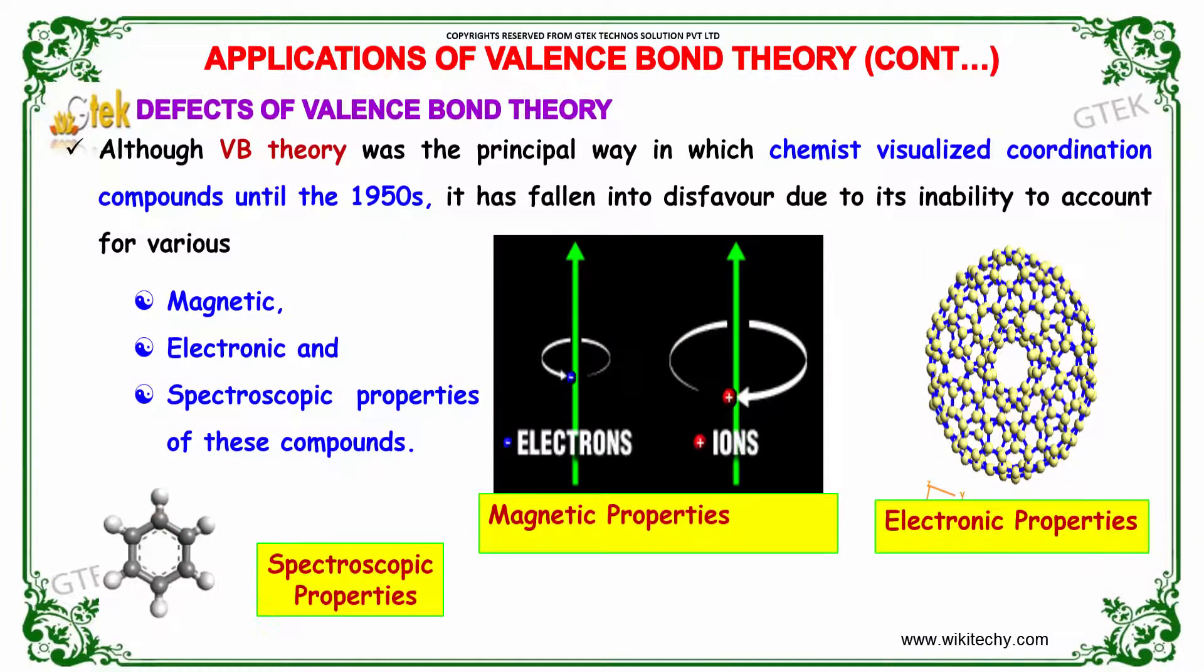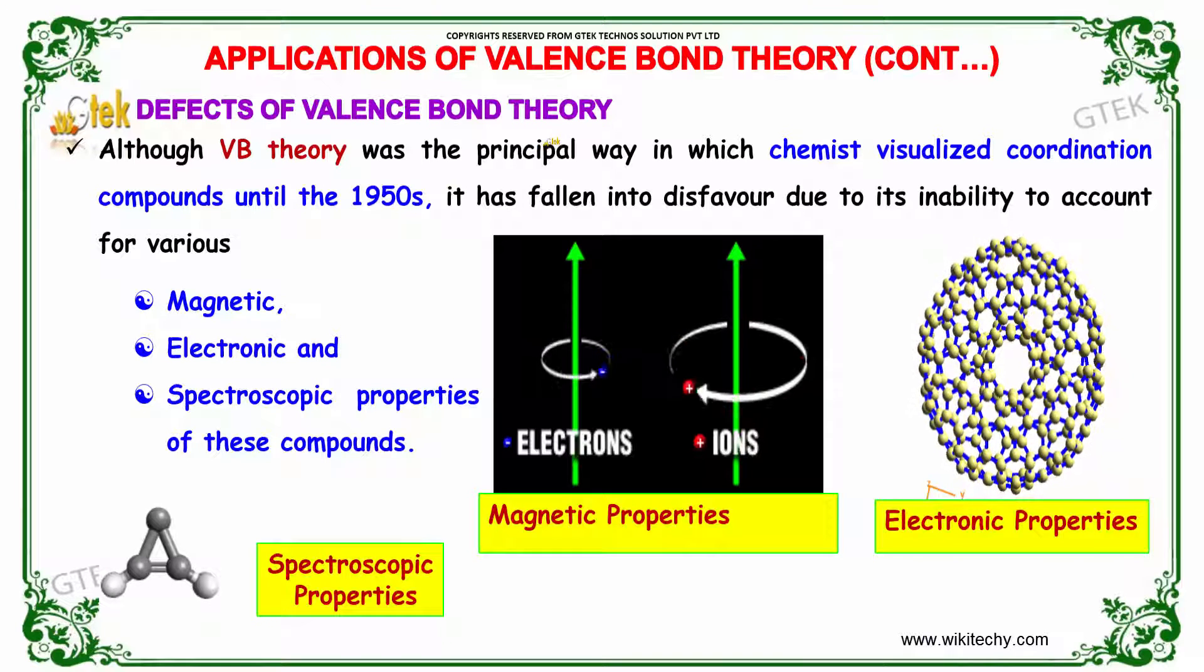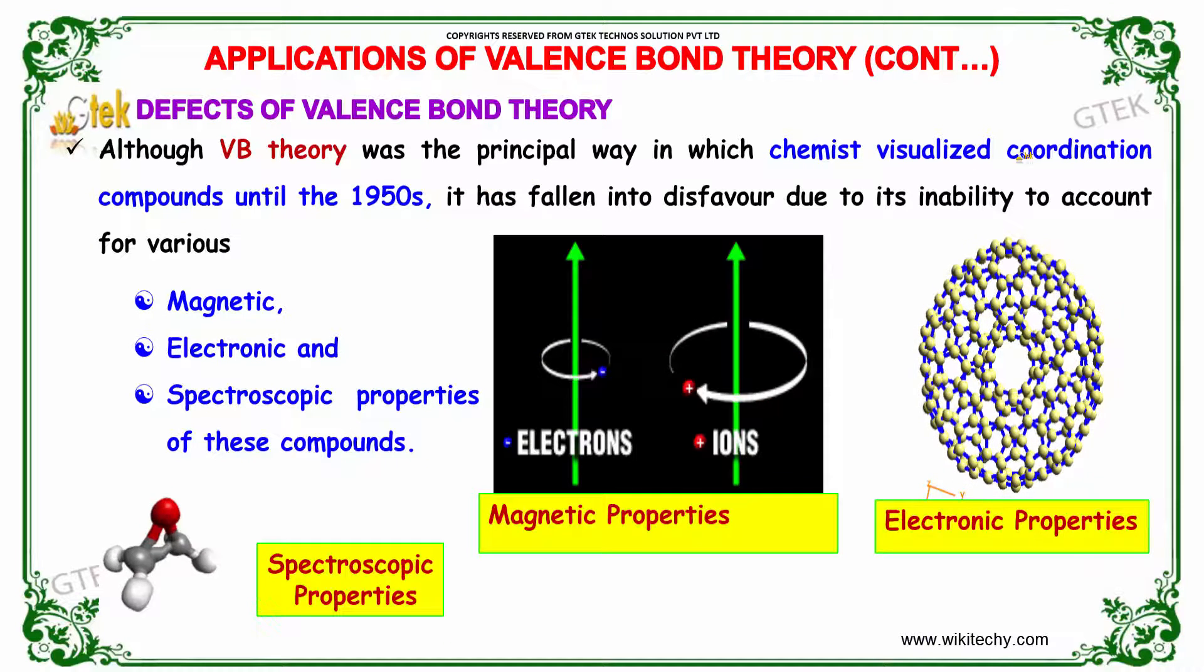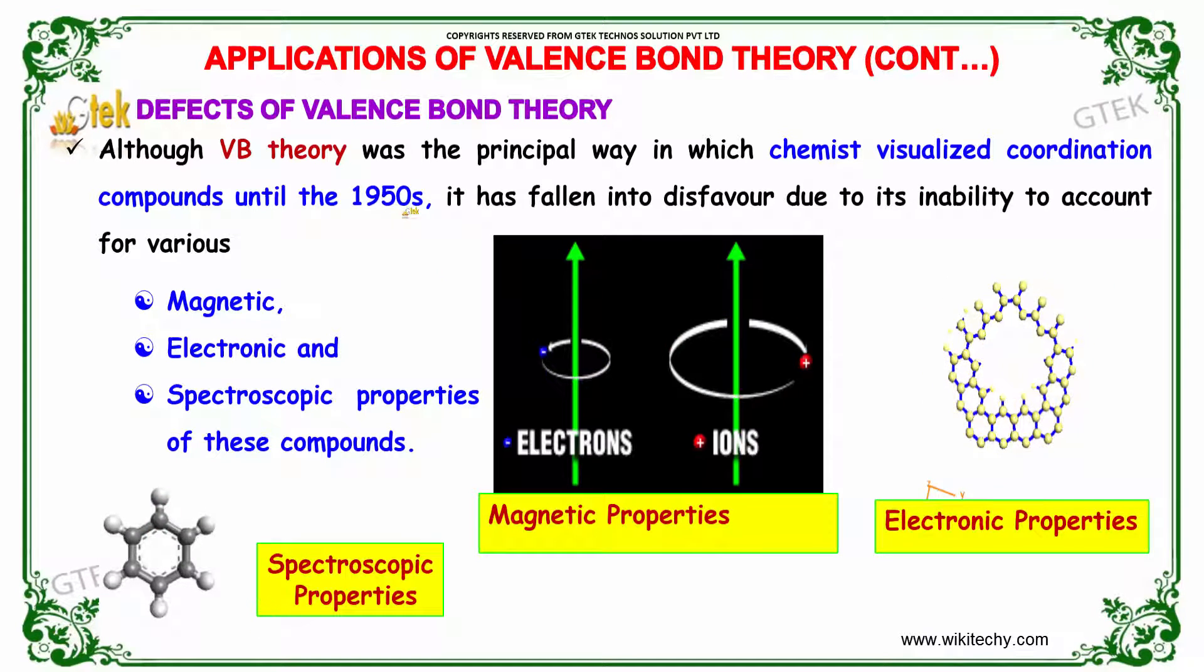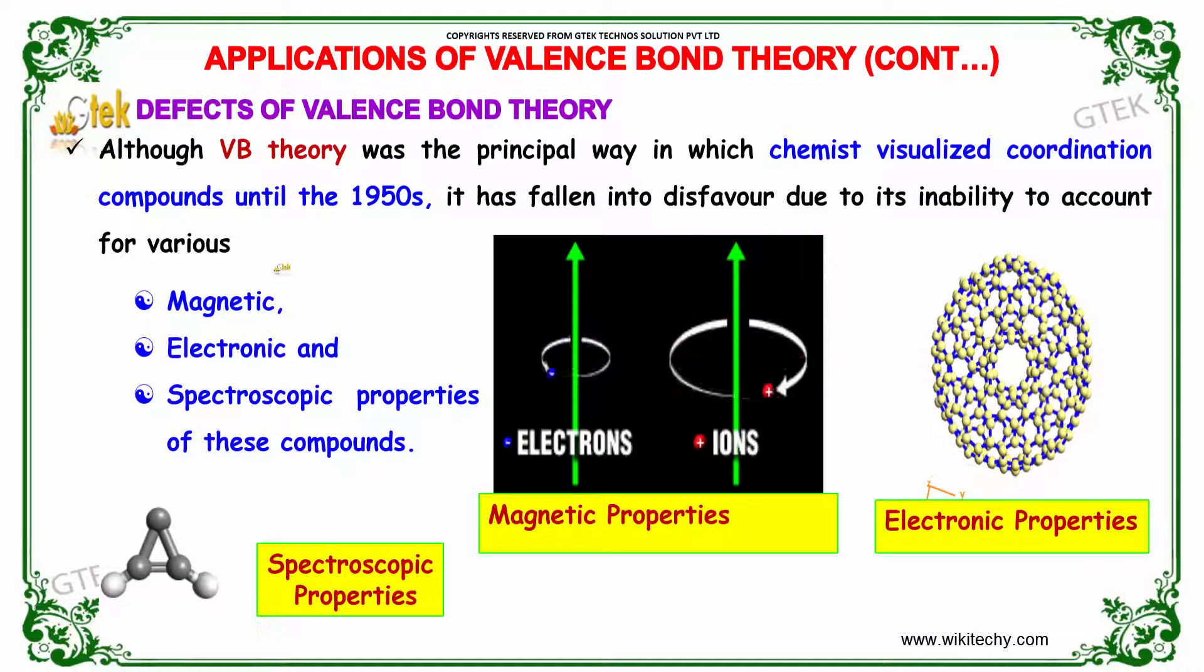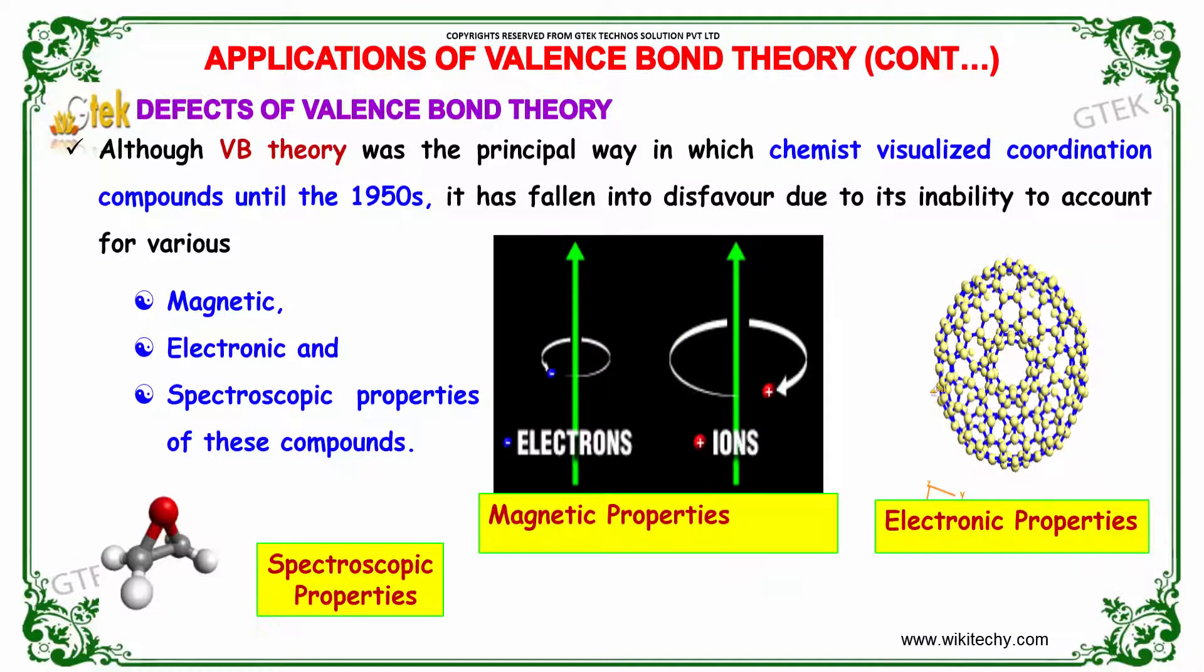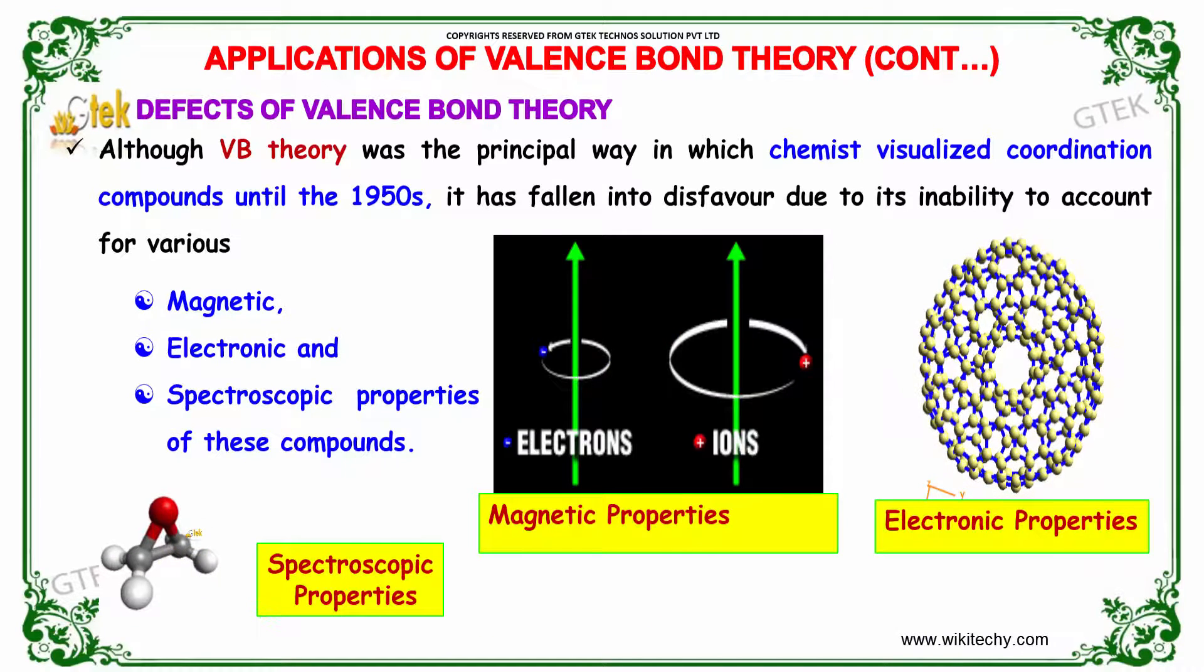Let me discuss the defects of valence bond theory. Although VB theory was the principal way chemists visualized coordination compounds until the 1950s, it has fallen into disfavor due to its inability to account for magnetic, electronic, and spectroscopic properties of these compounds.